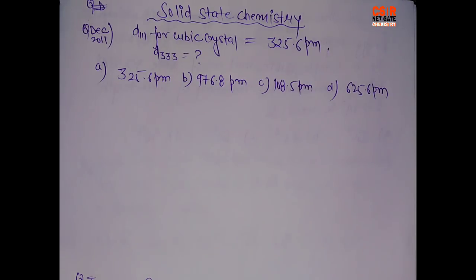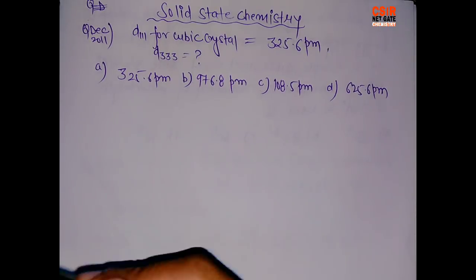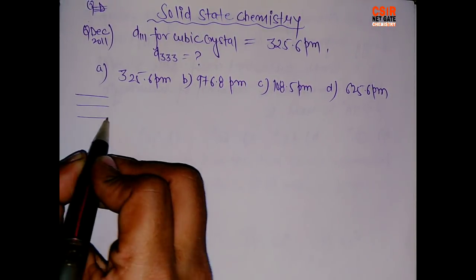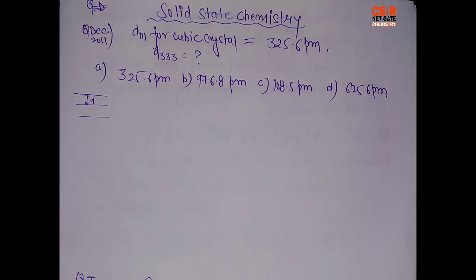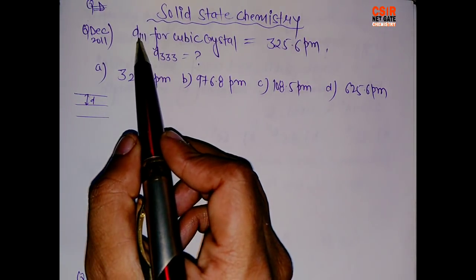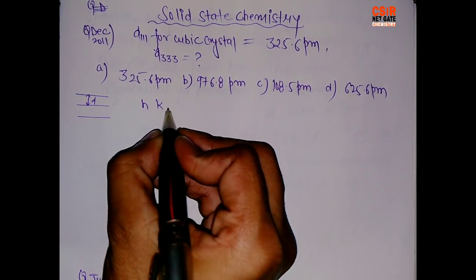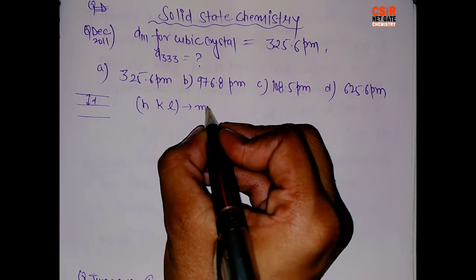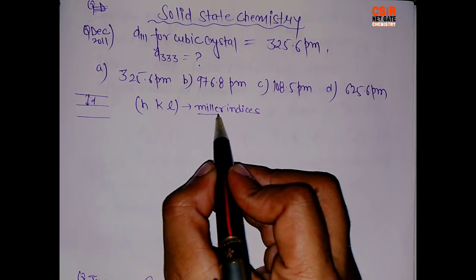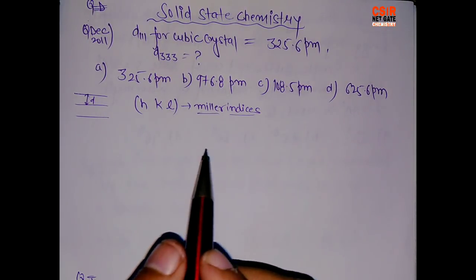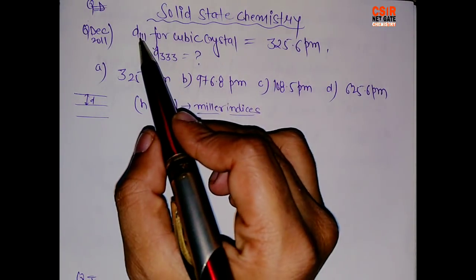In the first question we have been given D₁₁₁. This D is the interplanar distance — in atoms we have n number of planes, and between two consecutive planes we have a distance known as D, the interplanar distance. The 111 represents hkl values, known as Miller indices. These can be calculated by taking the reciprocal of the intercept, but that is a different topic — I will make a dedicated video on that.